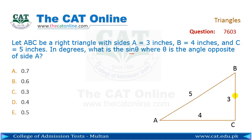This is the angle opposite to side A. Side B is 4 and C is 5. What is the sine of theta, where theta is the angle opposite to side A? This is opposite to side A.